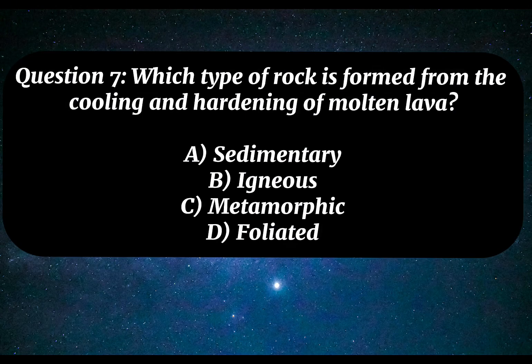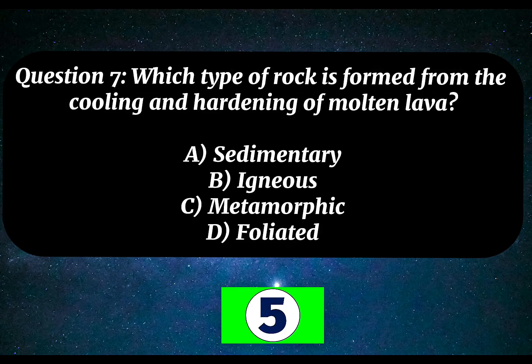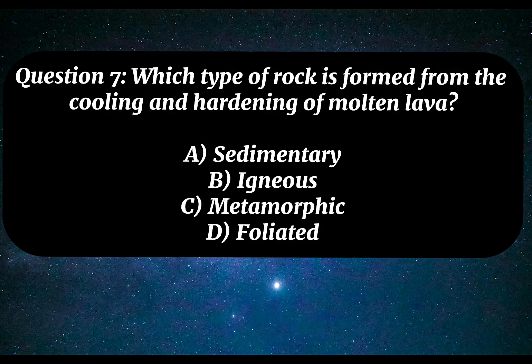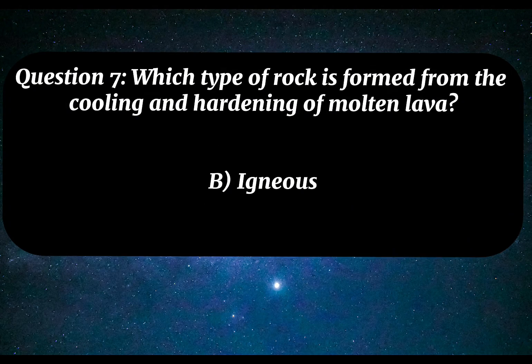Question 7. Which type of rock is formed from the cooling and hardening of molten lava? A. Sedimentary. B. Igneous. C. Metamorphic. D. Foliated. Correct answer: B. Igneous.